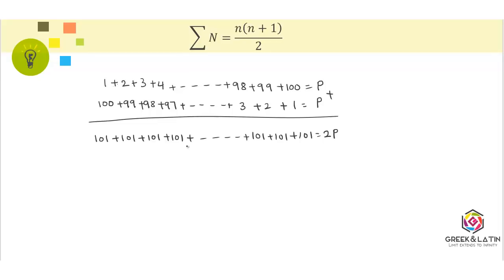This is 100 times 101, which equals 2 times P, and there you go. P is 100 times 101 divided by 2. On simplification, this turns out to be 50 times 101. The answer is 5050, which is the addition of the first 100 natural numbers.